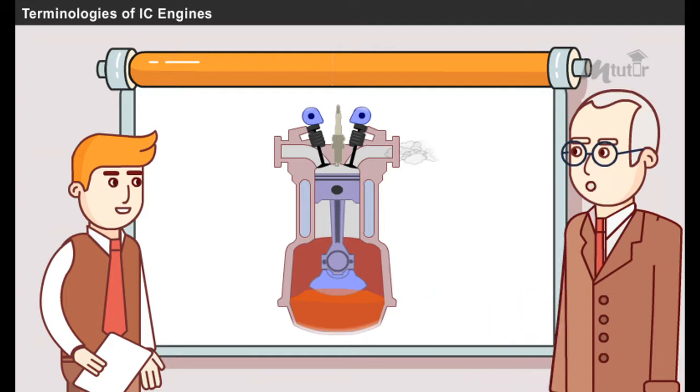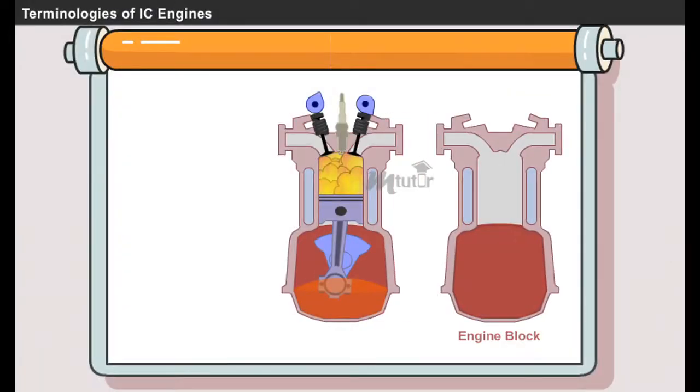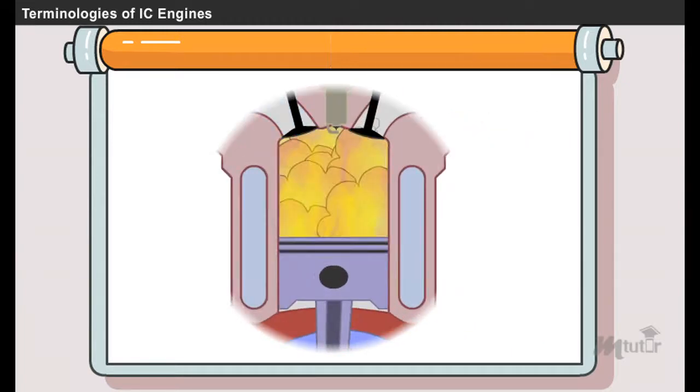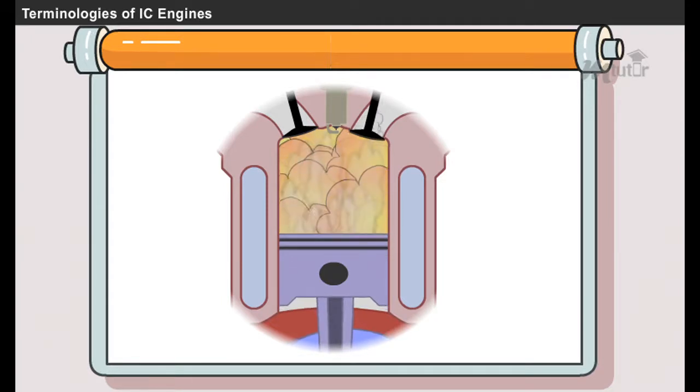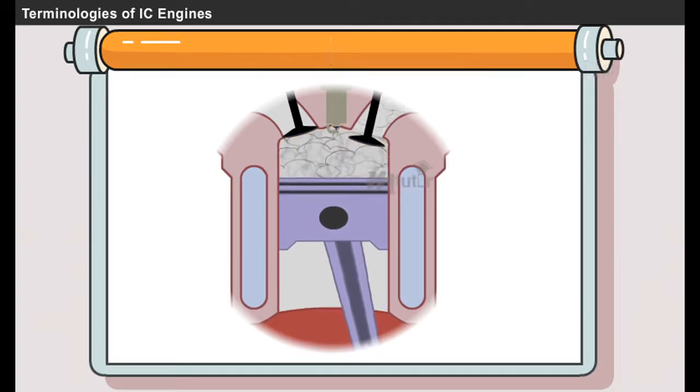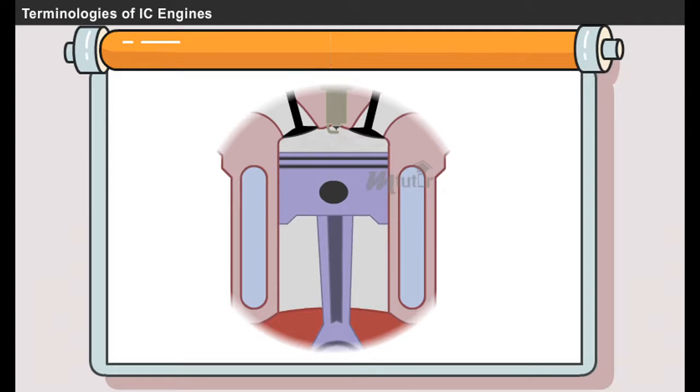Thank you sir. This is the engine block which provides the foundation for all the engine components. The inside diameter of the cylinder is called bore. It is measured in millimeters. The topmost position of the piston towards the cover inside of the cylinder is called top dead center or TDC.